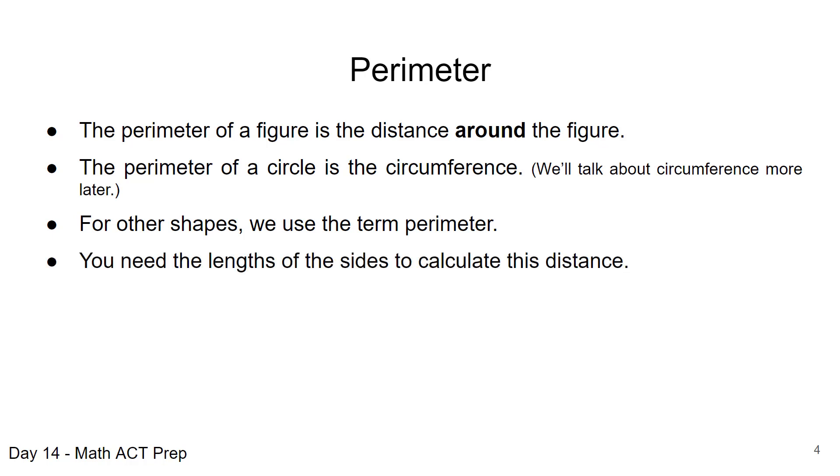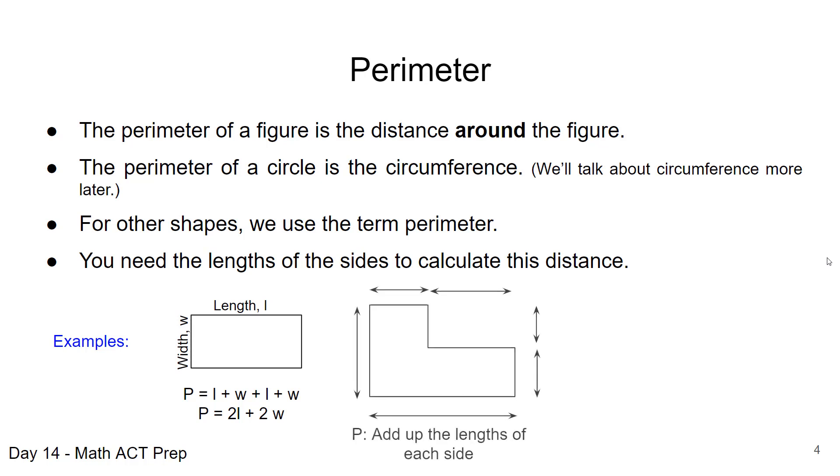We're going to need the lengths of the sides to calculate this distance of perimeter. If we have a rectangular figure and we're given the width and the length W and L, then to find the perimeter, we're going to add up each of those side lengths. So we'll end up with 2L plus 2W. That is the perimeter of a rectangle.